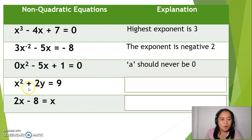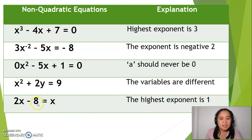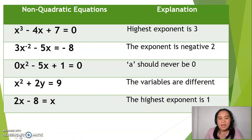Number 4 is not quadratic because the variables are different. And for number 5, this is not quadratic because the highest exponent is 1.